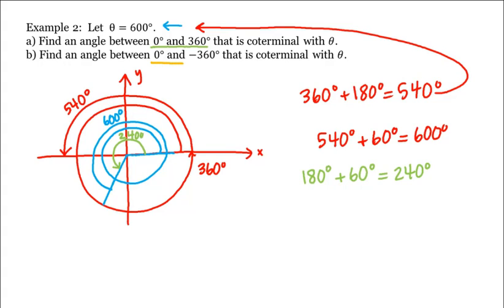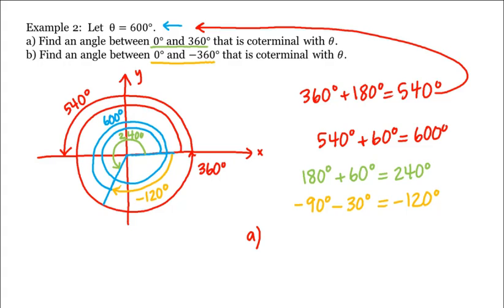Now we still need to find an angle between 0 and negative 360 degrees that is coterminal with θ. With negative measured angles, we go clockwise from the initial side. So wouldn't that be this angle here, which is negative 120 degrees? Because a quarter turn in the clockwise direction measures negative 90 degrees, and then we have to go 30 more. So that would be negative 120 degrees. So our answers here are 240 degrees and negative 120 degrees.